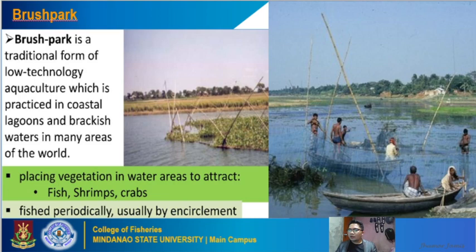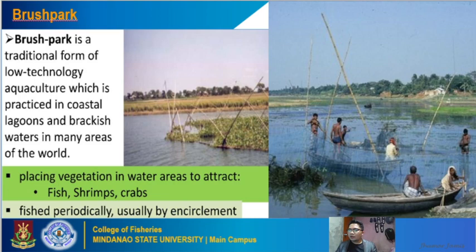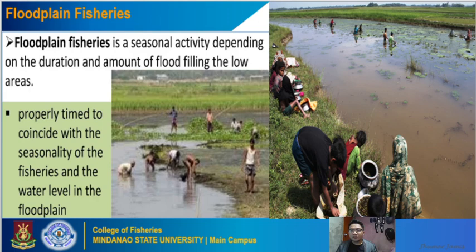Another is floodplain fisheries, which is a seasonal activity depending on the duration and amount of flooding in low-lying areas. It is done near riverbanks or river mouths and is properly timed to coincide with the seasonality of the fisheries and the water level of the floodplain. The images show people utilizing floodplains for fisheries during periods of higher water levels.